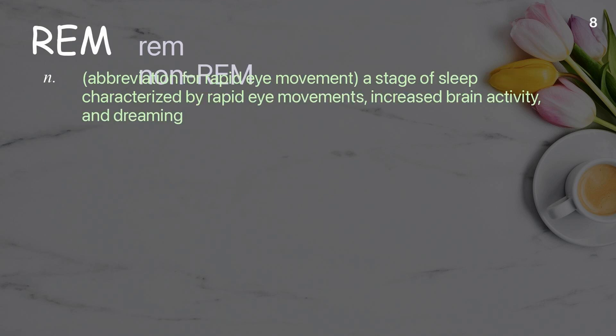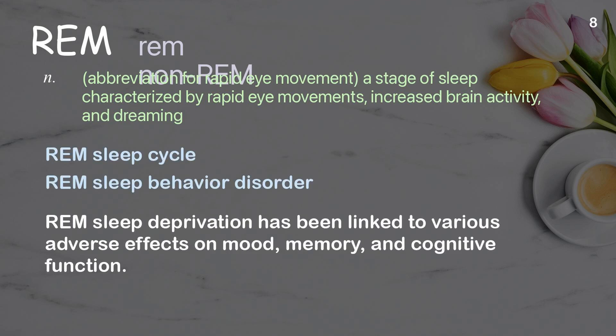REM: Abbreviation for rapid eye movement. A stage of sleep characterized by rapid eye movements, increased brain activity, and dreaming. Examples: REM sleep cycle, REM sleep behavior disorder. REM sleep deprivation has been linked to various adverse effects on mood, memory, and cognitive function.